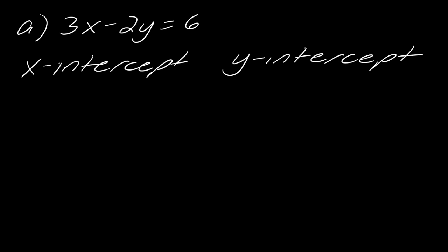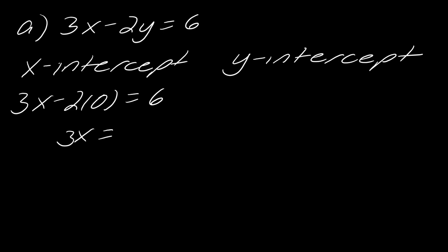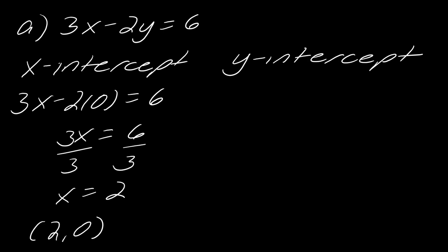With y equal to zero, look at what happens — this actually makes this problem very simple because the whole term drops out and we get 3x equals 6, and then I can solve to get x equals 2. So the x-intercept would be the point (2, 0).